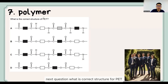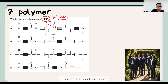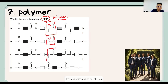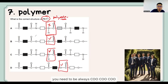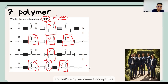Next question: what is the correct structure for PET? We know PET is a polyester, so we need to find the ester bond. Option A shows an amide bond — not correct. Option B shows an ester bond — yes. Option C shows an amide bond — no. Option D shows an ester bond but the linkage pattern is not consistently COO...COO...COO. Option B has the correct repeating ester linkage throughout, so the answer is B.